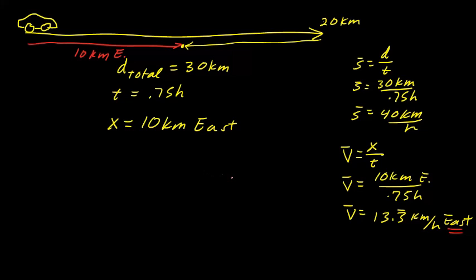This example clearly illustrates the real difference between speed and velocity. The speed was 40 kilometers per hour — a scalar measurement. The velocity was 13.3 kilometers per hour east — a vector measurement with direction. It's exceedingly important which term you use, because the answers are completely different. Remember: speed is change in distance over change in time, while velocity is change in displacement over change in time.